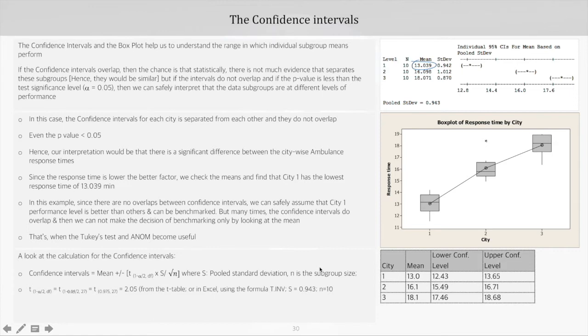So it becomes t(1 minus alpha by 2, degrees of freedom). So alpha is 0.05 and the degree of freedom is 27, so we need to look for the t(0.975, 27) in the t-table. So we get a value of 2.05. We can also do this calculation in Excel using the formula T.INV.